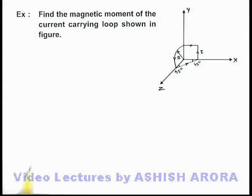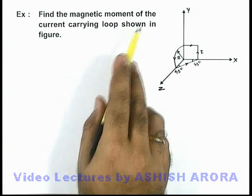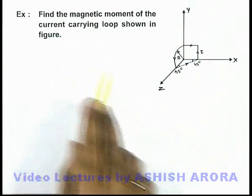In this example, we are required to find the magnetic moment of the current carrying loop shown in the figure.